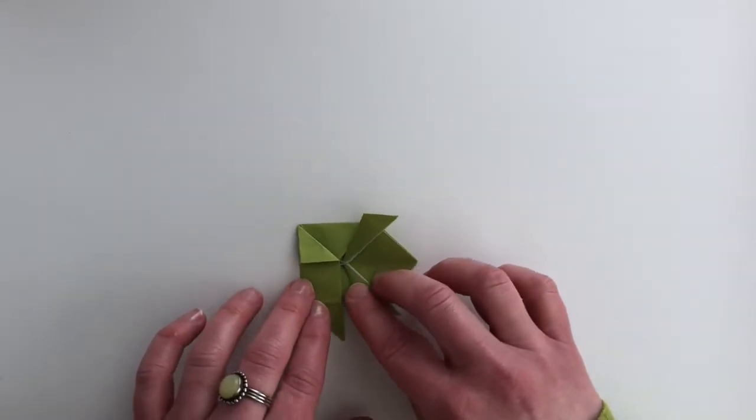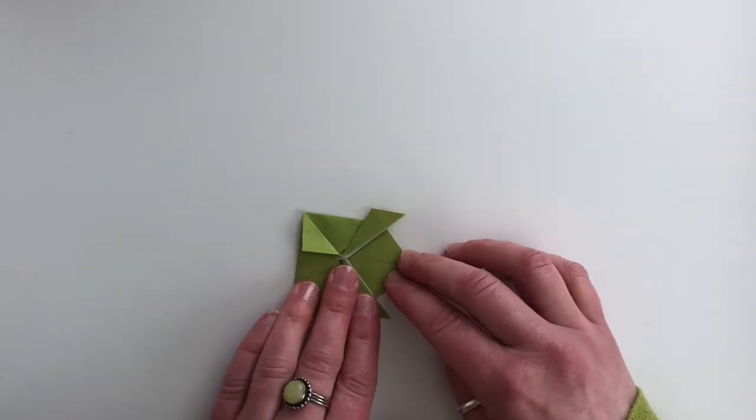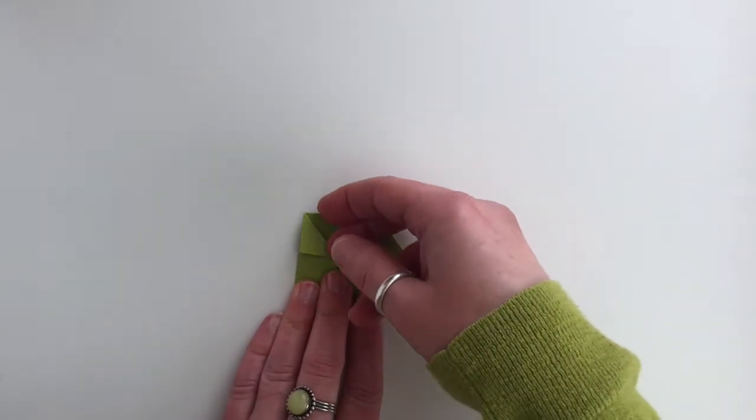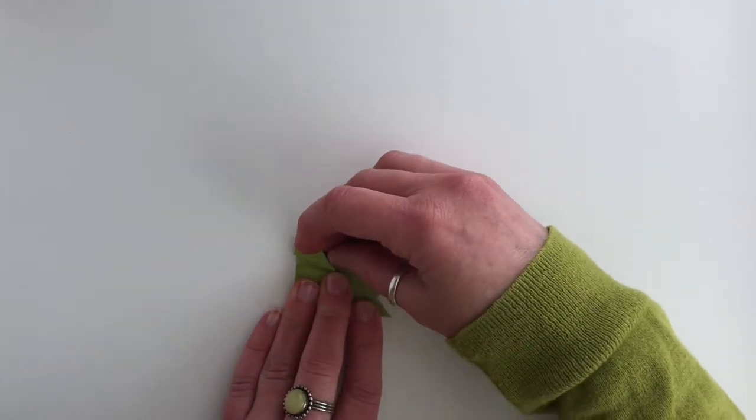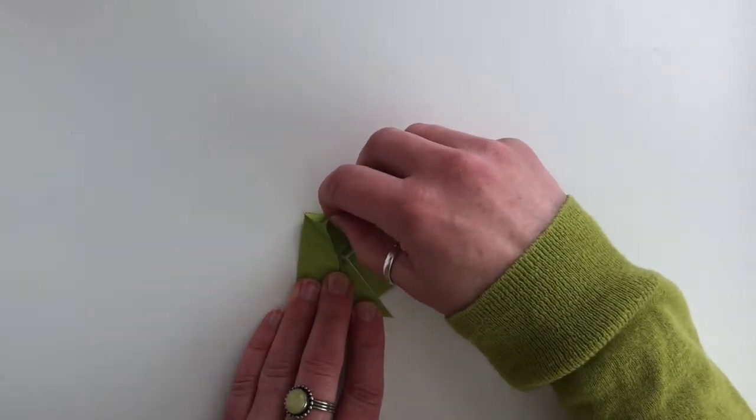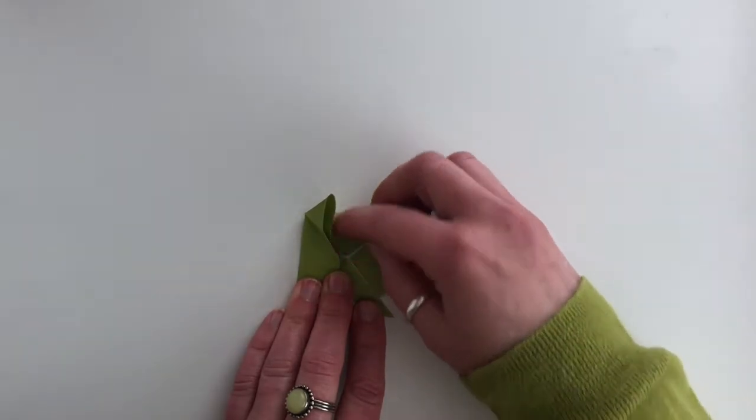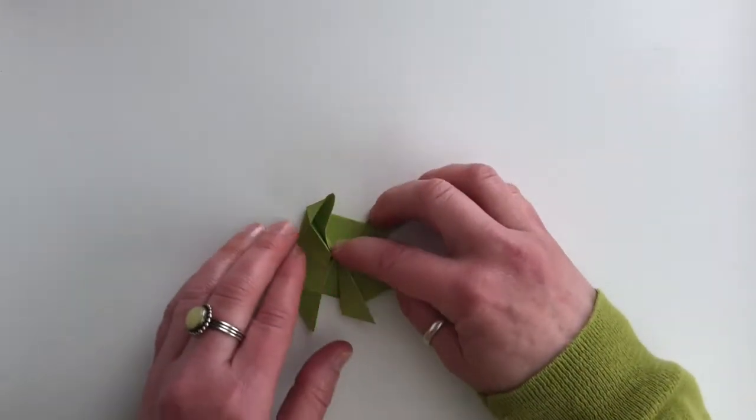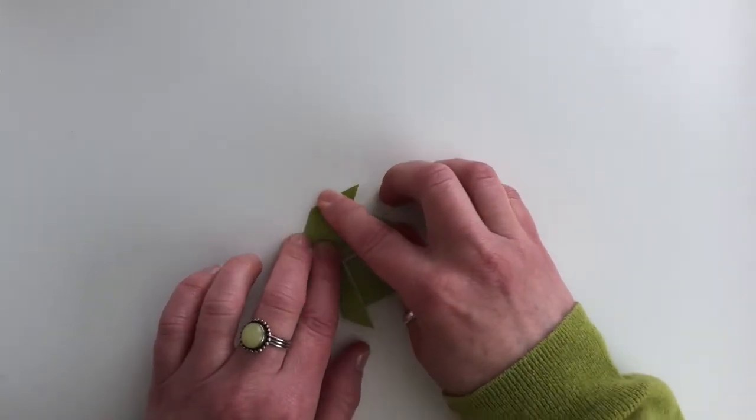And we're going to do the same thing on the other side. Hold down the rest of your frog so the whole thing doesn't come unfolded while you do this. We're grabbing the inside layer and pulling it out like that, and then making sure that it folds nice and flat.